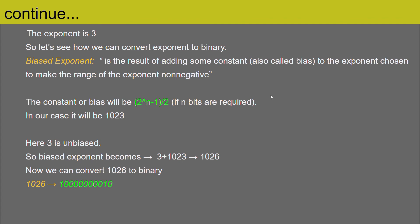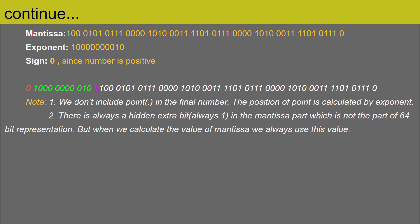We have now calculated the mantissa, the exponent, and the sign digit — since the number is positive, the sign bit is zero. We can combine all three parts to get the final 64-bit representation. The sign digit comes first, then the 11-bit exponent, then the 52-bit mantissa. I have included that one extra hidden bit for clarity, but to reiterate, it is not part of the actual 64-bit representation.